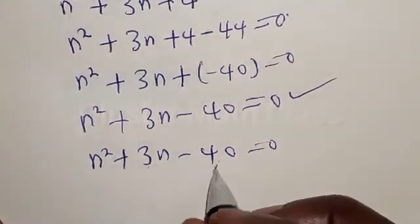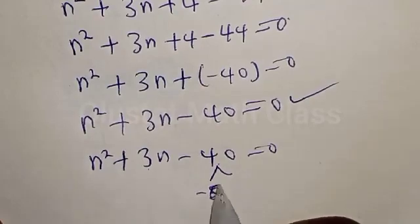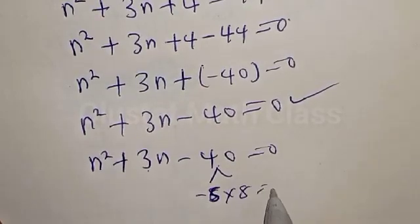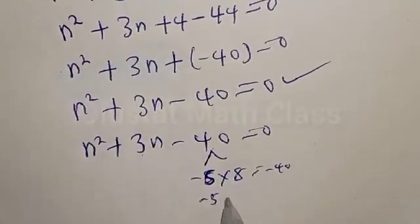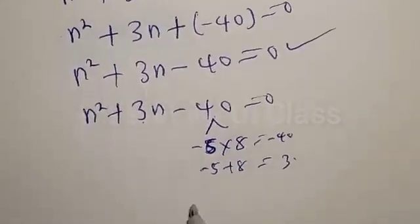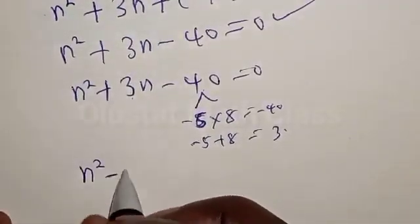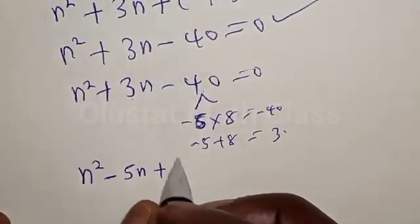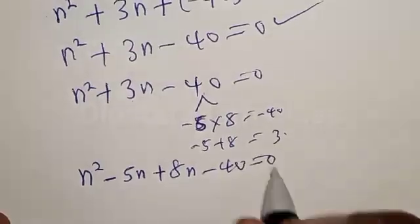We find two numbers so that the product will give minus 40 and the sum will give 3. If we have minus 5 multiplied by 8 that is minus 40, and minus 5 plus 8 that is 3. Therefore, we have n squared minus 5n plus 8n minus 40 is equal to 0.